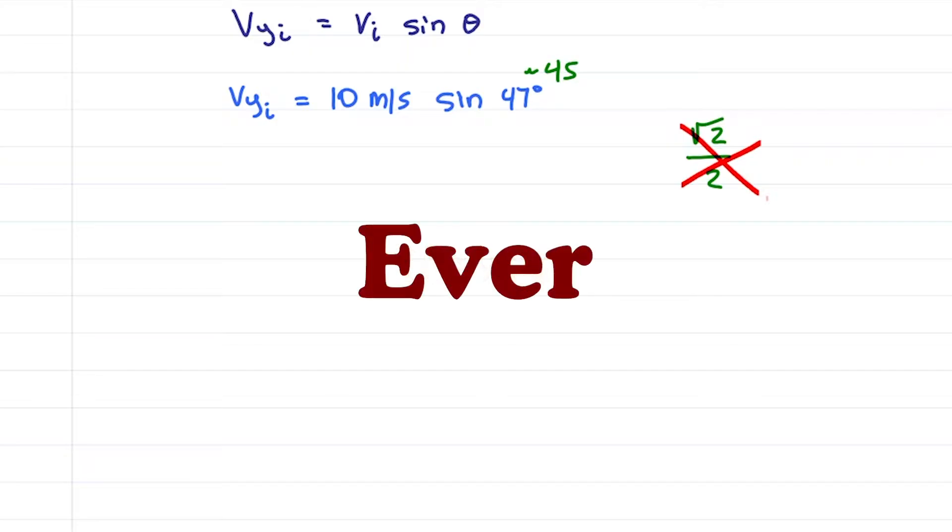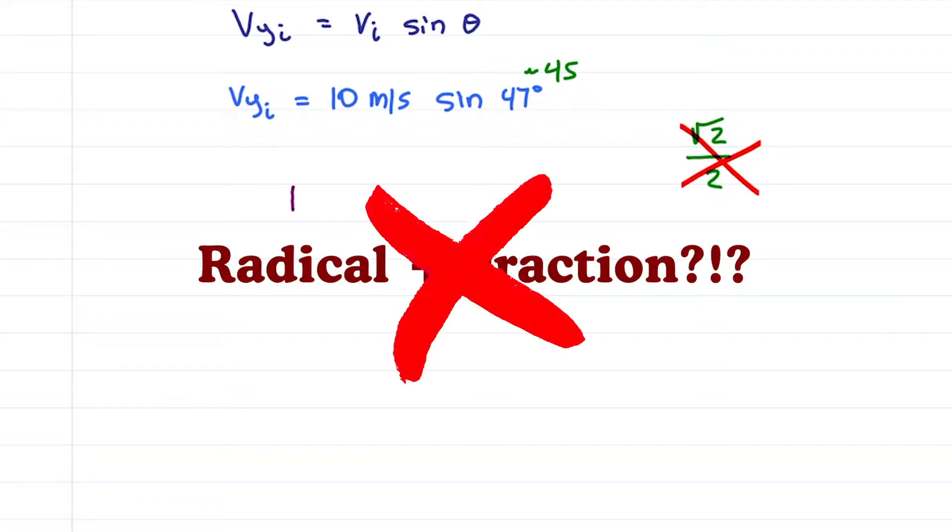47 is close to 45 which you do need to memorize and that is radical 2 over 2. No, never ever use radical 2 over 2 in mental math. How are you going to deal with the radical and the fraction?